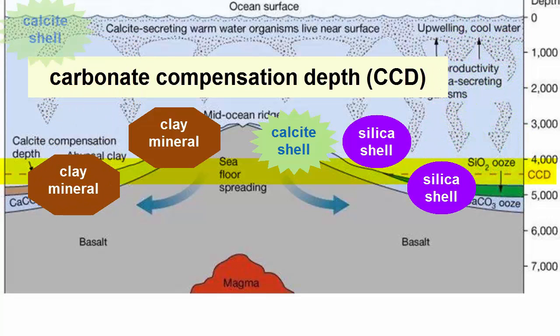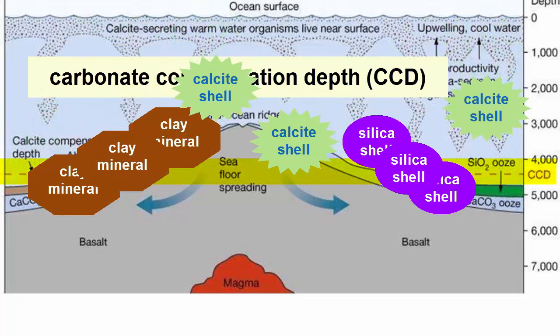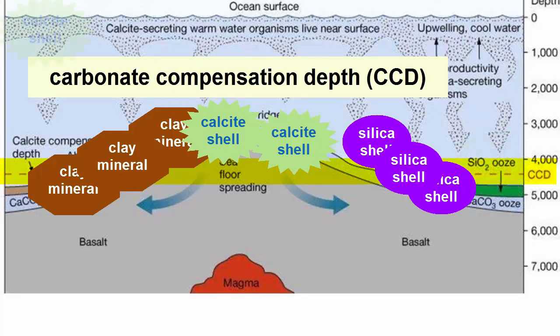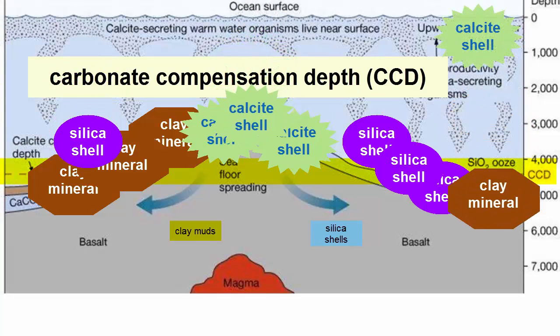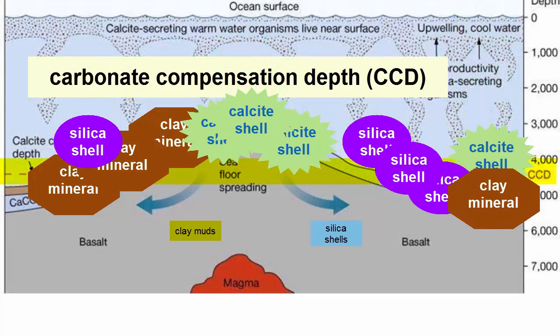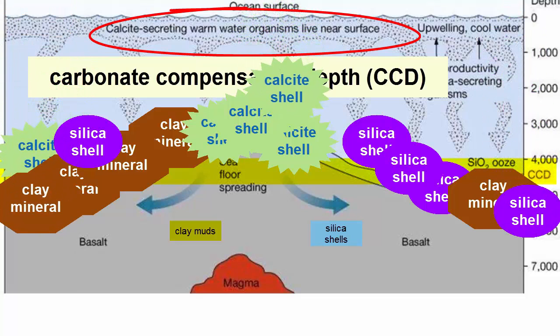That creates an interesting distribution of muds or oozes on the seafloor. Muds exposed to seawater at depths below the CCD will be composed almost exclusively of clays and silica shells. So even though carbonate-shelled creatures can be quite abundant in the surface waters of the ocean, their shells might be absent in the seafloor sediments below.